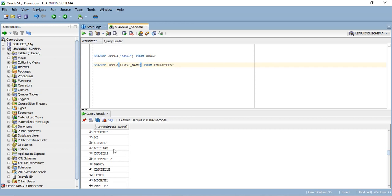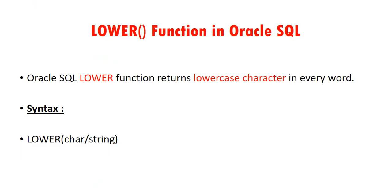Next, we will learn about the LOWER function. The Oracle LOWER function returns lowercase characters for every word — it is opposite to the UPPER function. When we pass a character or string inside the LOWER function, it always converts all characters into lowercase.